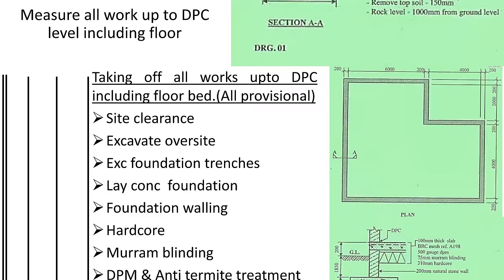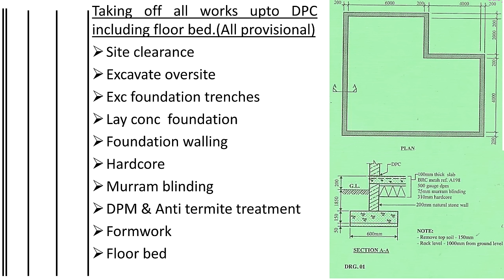Let's get started. When taking off, there's a procedure to follow. First, we do site clearance, then we excavate the oversite. The oversite is the top layer. When you clear the site, there are vegetations held in place by topsoil — the soil that supports growth. We remove all that soft soil because it's not good for construction. We always excavate the topsoil, and in our notes we're told topsoil is to what depth. Here we've been told 150 millimeters, so we excavate 150 millimeters.